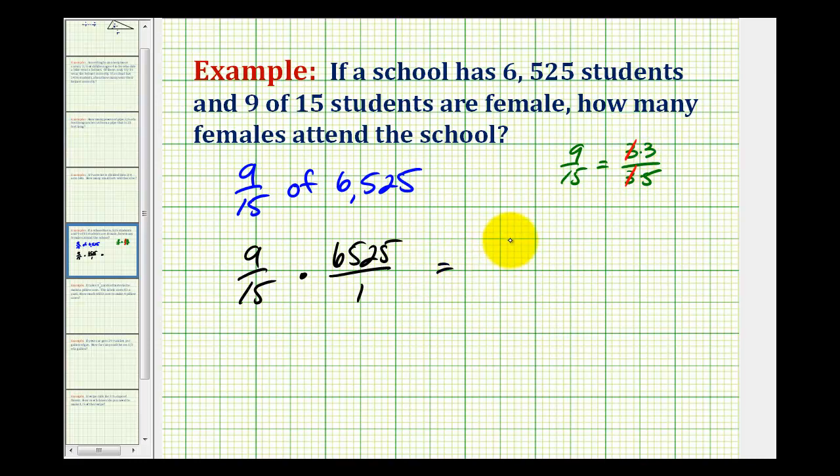So we can rewrite this as 3/5 times 6,525 all over 1. And I also noticed that this large number here ends in a 5, which means it's divisible by 5. So let's rewrite this again.